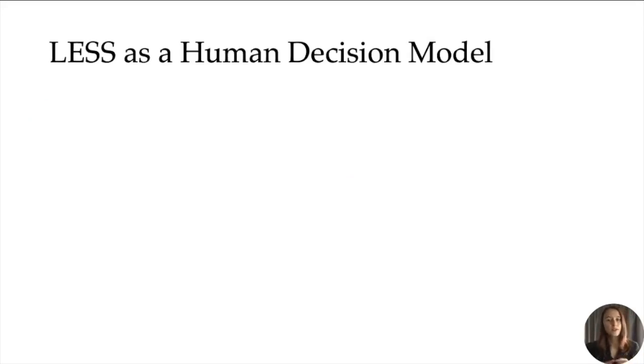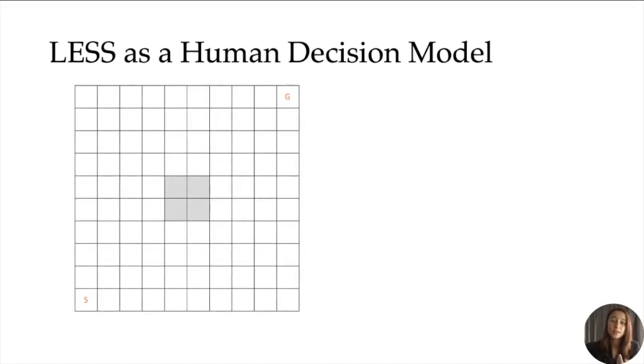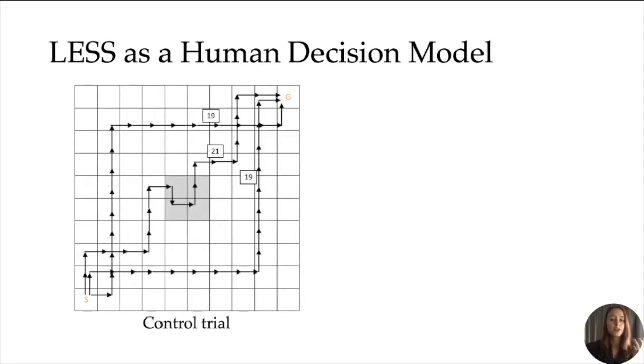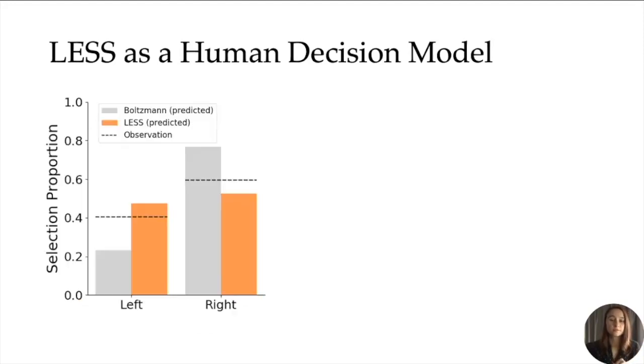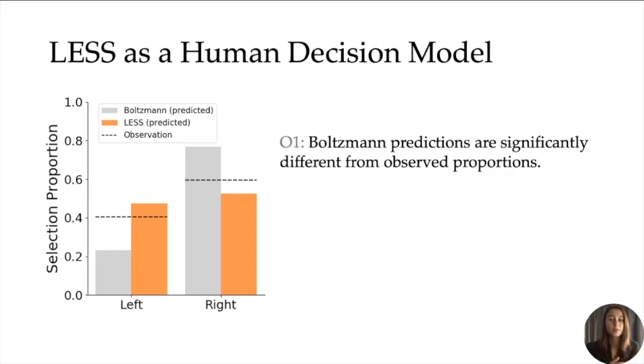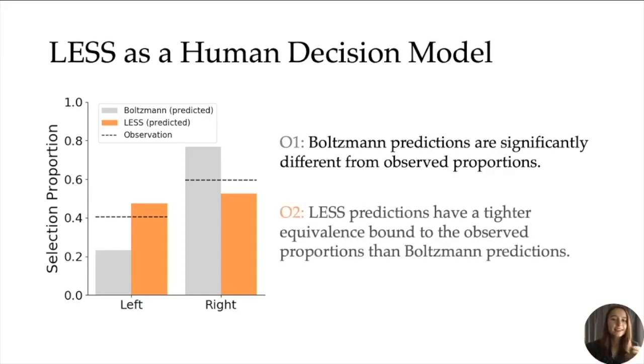First, we checked if people choose trajectories based on LESS or Boltzmann. We ran a Mechanical Turk study with 80 people, split into two groups. The task was to teach a robot how to navigate while using the least number of tiles and avoiding the obstacle. In the control group, the participants saw two equally good trajectories, left and right, and one bad one. This gave us control proportions of left versus right trajectories being chosen. In the experimental group, we added two right trajectories very similar to the original one. Here we show the predicted proportion of left versus right choices using Boltzmann and LESS, respectively, as well as the observed proportion in the experimental trial with a dotted line. Our main observation of this experiment is that the Boltzmann proportion prediction is significantly different from the observed, whereas LESS proportion predictions provided tighter equivalence bounds to the observed.